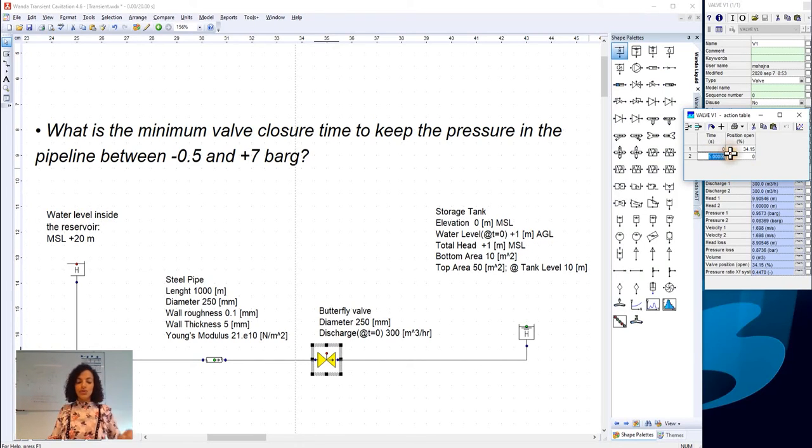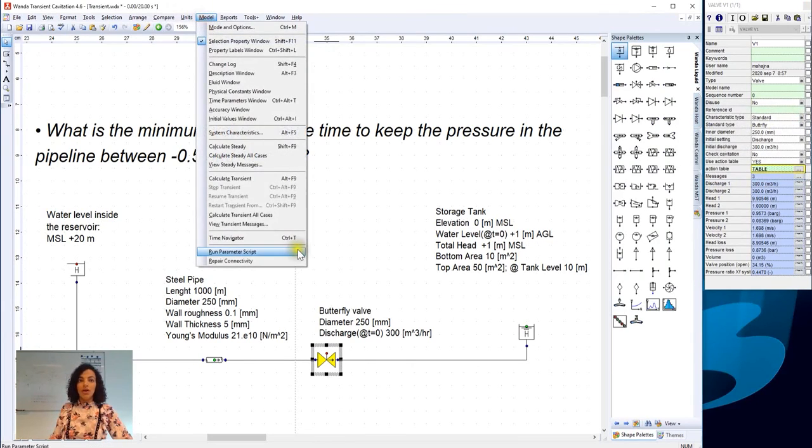So, here, we choose to look at the results of closing the valve in 10 seconds instead. Now, we run the model again.